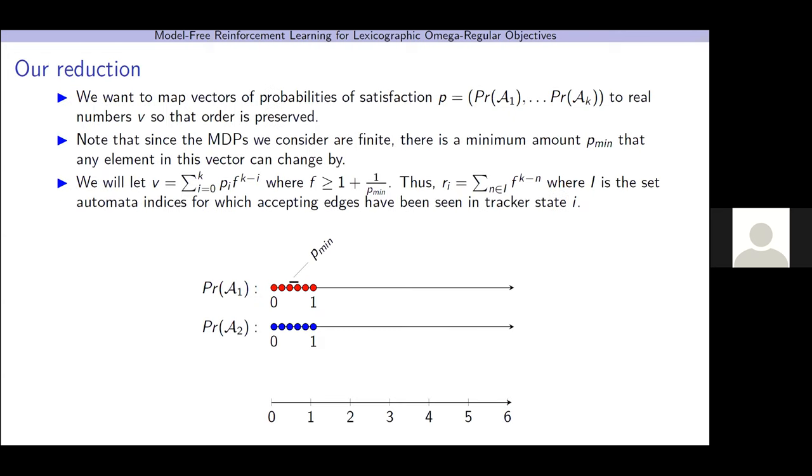So, what we want is we want to map vectors of probabilities of satisfaction to real numbers so that the lexicographic order is preserved. Note that since the MDPs we are considering are finite, there is a minimum amount p_min that any element in this vector could change by. So, we're going to let v be this weighting of each of the probabilities, where we're going to give an exponentially higher weight for more important properties. And our reward is going to be exactly the same, except we're going to do this, instead of on the probability vector, we're going to do this on the bit vector from the tracker.